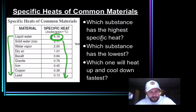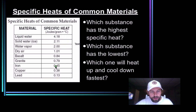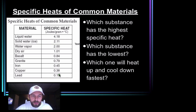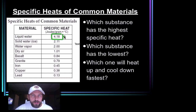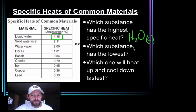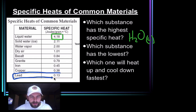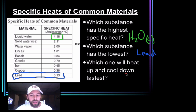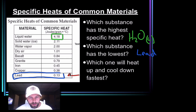Which substance has the highest specific heat? Looking at our chart here, we can see lead all the way down at the bottom with 0.13 joules per gram degrees Celsius, going all the way up to liquid water with 4.18 joules per gram degrees Celsius. That means it takes 4.18 joules of energy to heat up one gram of liquid water one degree Celsius. Which substance has the lowest specific heat? The lowest is at the bottom — lead has 0.13. And finally, which one will heat up and cool down the fastest? If we're racing, the lower the number, the faster. So lead would heat up and cool down the fastest.